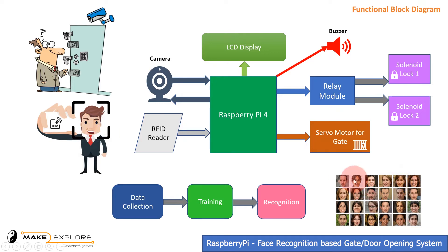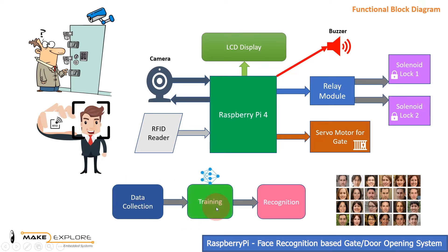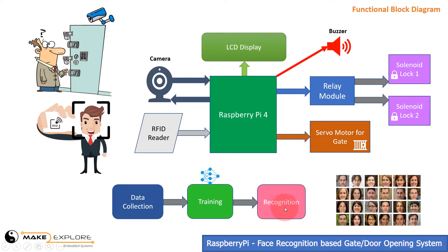After that, we will put those images in a dataset folder, with a separate folder for each authorized user. In the second stage, we will train the system to recognize correct faces. And finally, in the recognition part, we will recognize valid authorized users on the live camera feed.